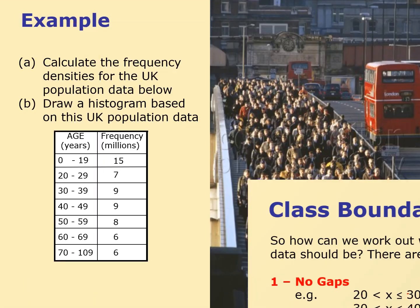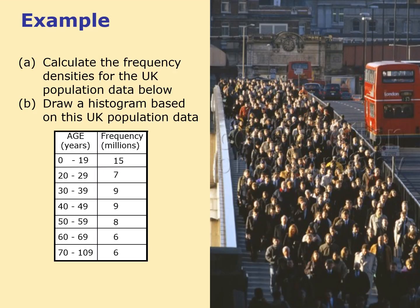Now I want you to draw a histogram. You'll have to use the frequency density formula. For instance, the interval 0 to 19 — being careful, it's effectively 0 to 20 — has a class width of 20. So I do 15 divided by 20, which is 0.75. Remember this is the frequency density. You'll need to do that for all of the intervals, then draw me a histogram. Pause the video and have a go.